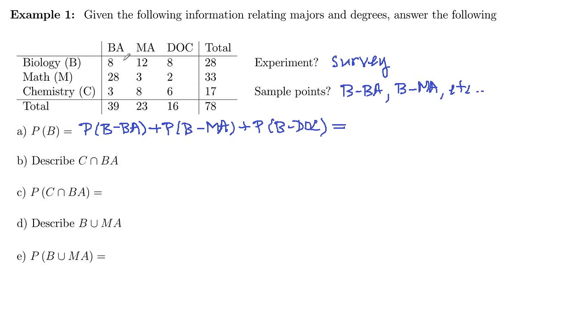So we had eight that got a BA out of 78, and then we had 12 that got an MA out of 78, and then we had eight that got a doctorate out of 78. So that is 28 out of 78.